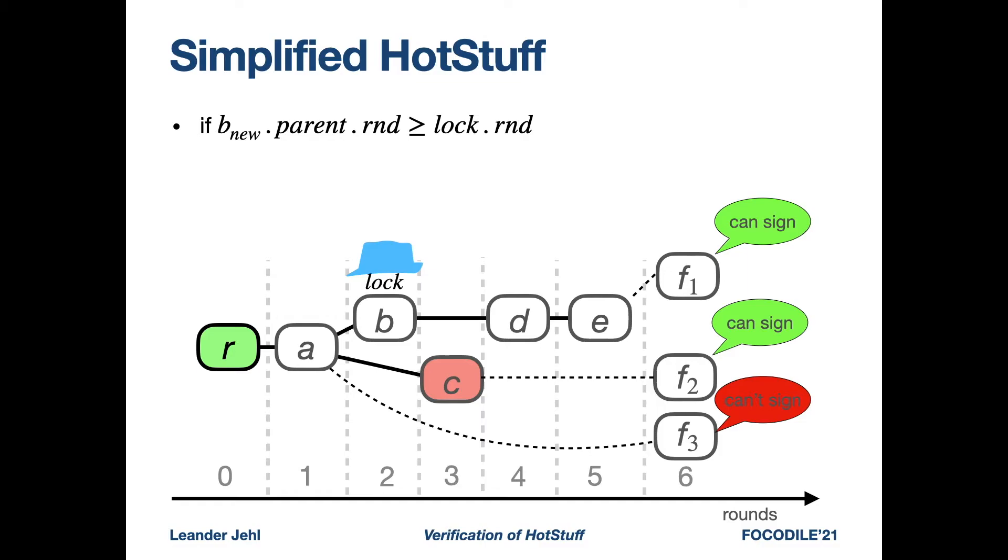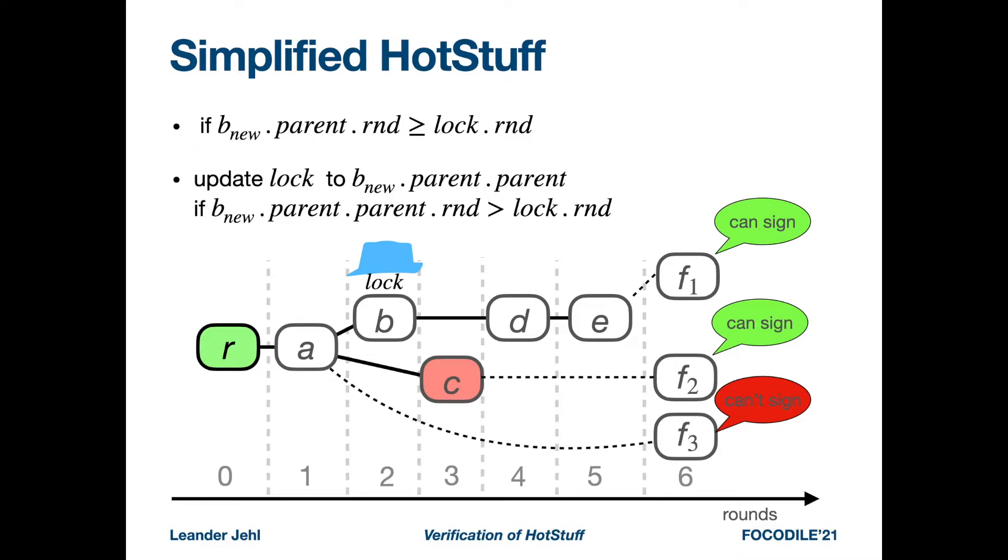The goal of this rule is to allow the system to arrive in a state where only blocks like F1, that are descendants of the locked block, can be signed and then the locked block can be committed.